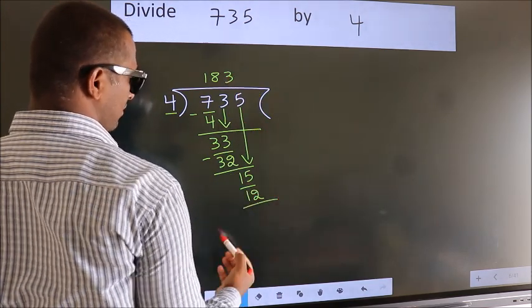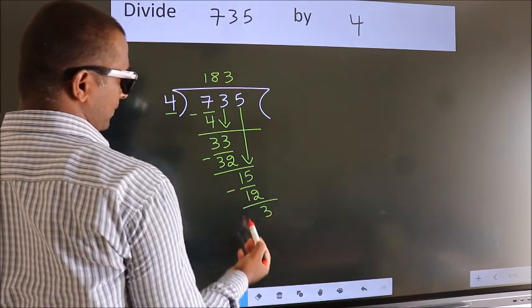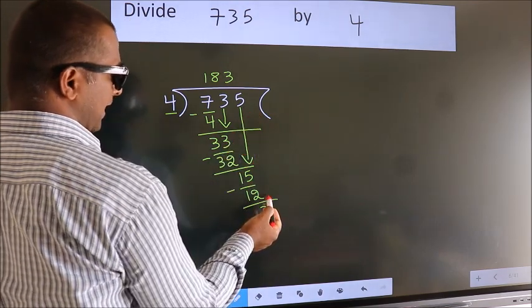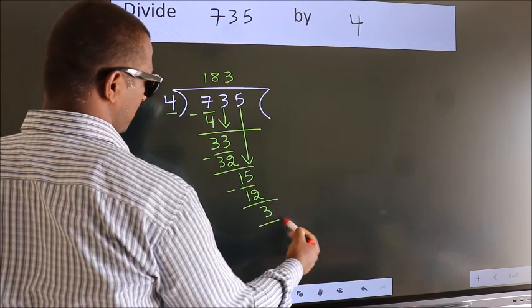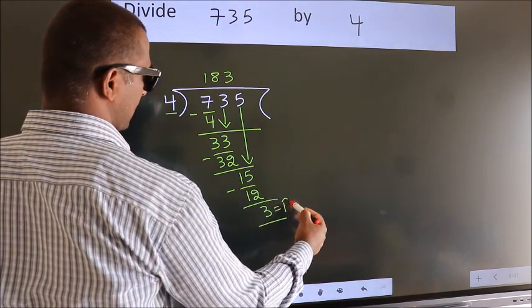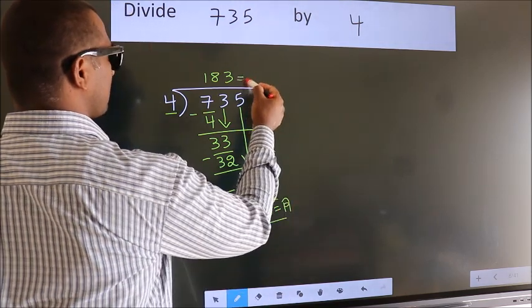Now, we subtract. We get 3. No more numbers to bring it down. So, we stop here. This is our remainder. This is our quotient.